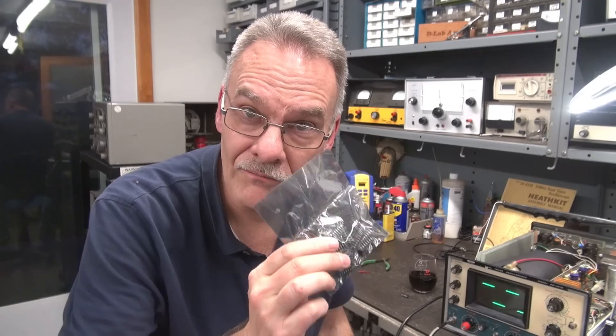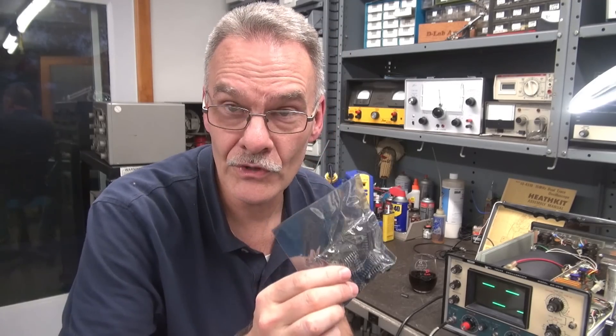So news update for you. I found a bag of 25 of those UA 760 chips. So if you're working on one of these Heathkit scopes, you've got a trigger problem and you suspect that chip's bad, I've got them on hand. Drop me a line.